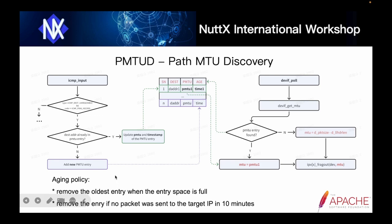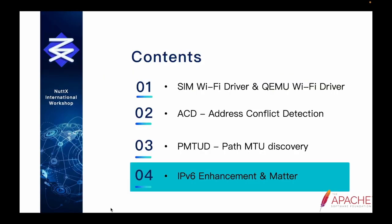To make the policies flexible enough, we set up an aging policy for PMTU entries. The first policy is to remove the oldest entry when the entry space is full. The second policy is to remove an entry if no packet was sent to the target IP within a timeout period. The next part is IPv6 enhancement and MATA.